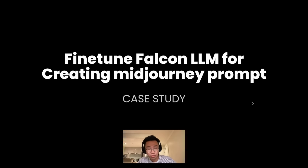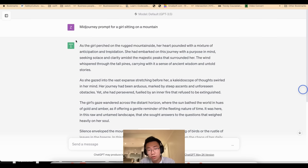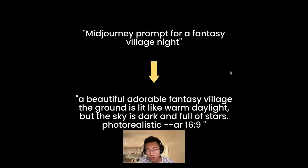I want to show you a step-by-step case study on how you can fine-tune a large language model for creating mid-journey prompts. This is a great use case because it is not a task that base models like GPT are good at. What I want is a large language model that can take a simple instruction like this and turn it into a mid-journey prompt.